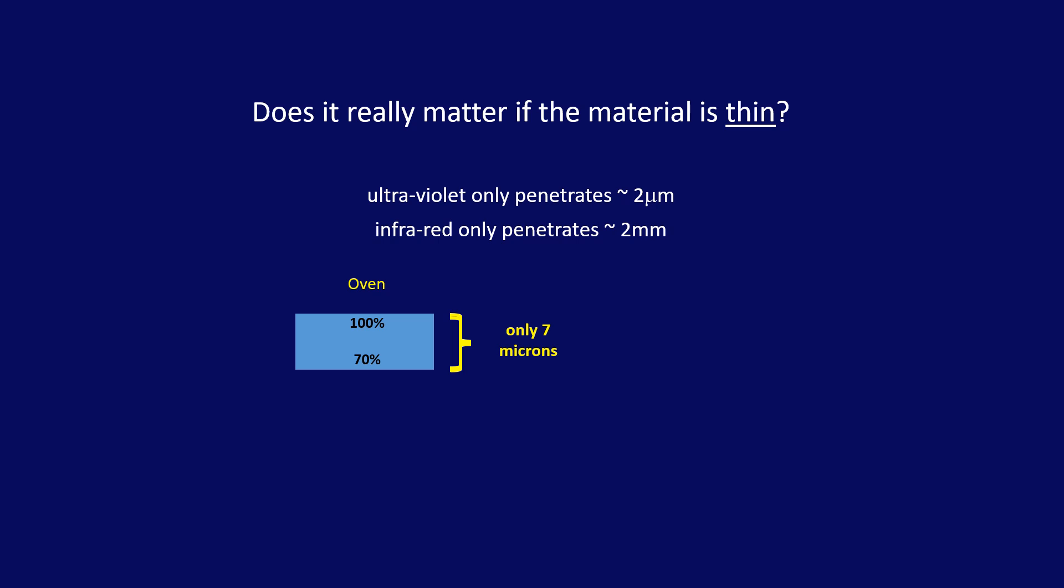But wait, what if the sample is thin, like a coating? Surely an oven would heat a very thin coating quickly in all dimensions. In a published study, it was found that a polyamide coating only 7 microns thick was not heated uniformly from top to bottom in an oven, but completely cured from top to bottom by microwaves. VFM fields have nearly molecular level uniformity.